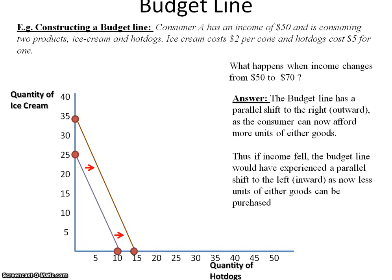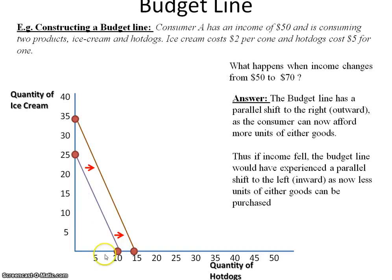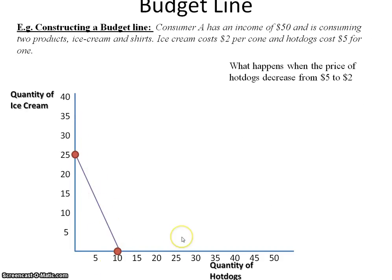Conversely, if income decreases from $70 to $50, we move from the new budget line back to the original. A decreasing income results in a leftward or inward parallel shift in the budget line.